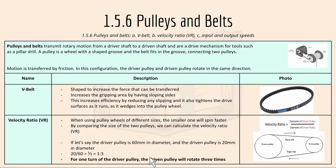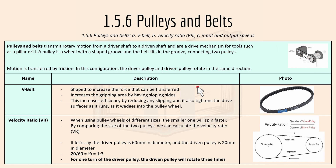1.5.6 is pulleys and belts. Pulleys and belts transmit rotary motion from a driver shaft to a driven shaft, and are a driving mechanism for tools such as a pillar drill. A pulley is a wheel with a shaped groove and the belt fits in the groove connecting two pulleys — motion is transferred by friction, and in this configuration the driver and driven pulleys rotate in the same direction. The V-belt is shaped to increase the force that can be transferred, increasing the gripping area with sloping sides, which increases efficiency by reducing slipping and wedging into the pulley wheel as it runs.